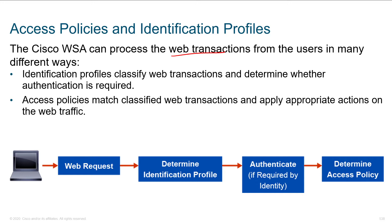Does it mean we don't use the ASA for HTTP filtering? Potentially you could do some filtering, but what you're going to have there is going to be a subset of what's available on the WSA. Just like we can do some light protection on the ASA, on Firepower, for our mail servers — but the best thing that we can put in front of our mail server is an ESA, because it's a purpose-built appliance just for looking at email content.